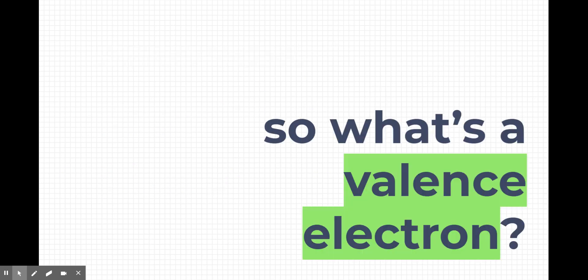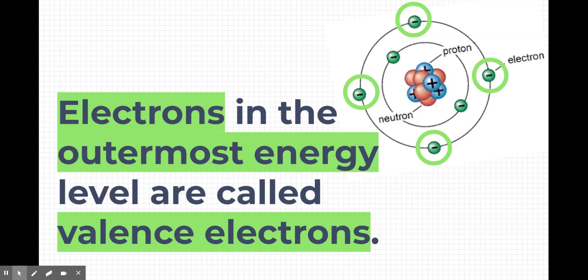So what is a valence electron? Well, a valence electron is not an extra electron. It's just what the electrons in the outermost energy level are called. The electrons in the outermost energy level, whatever level number that may be for the atom, are called valence electrons. So this atom here has four valence electrons. Of its six total electrons, four are considered valence because they're in the outermost energy level.